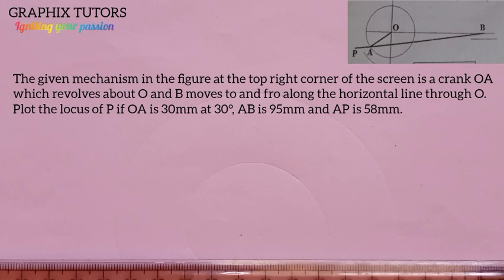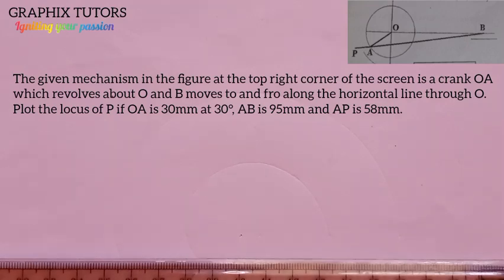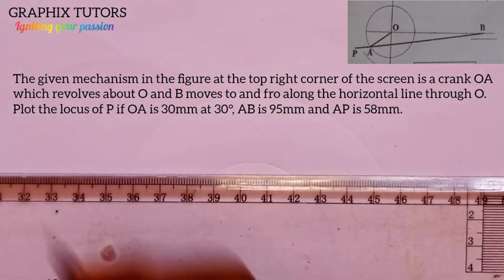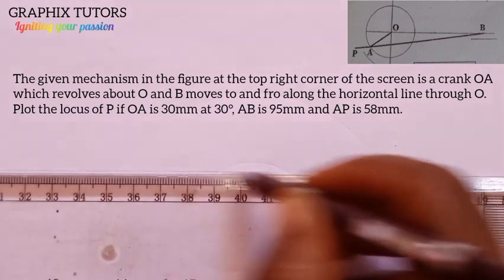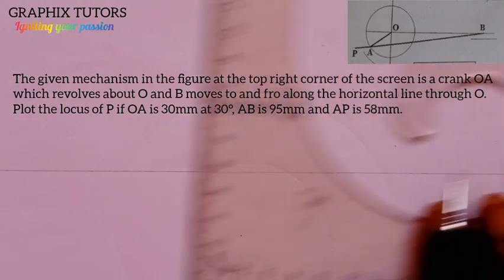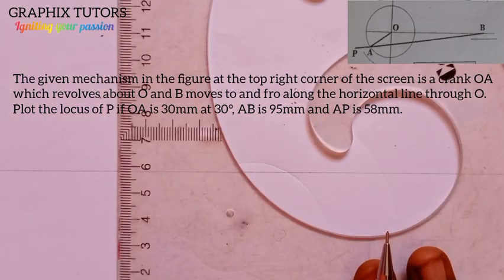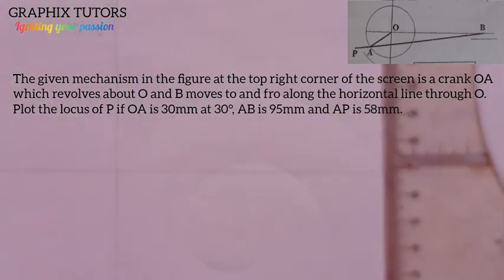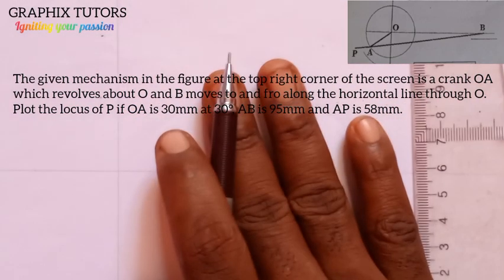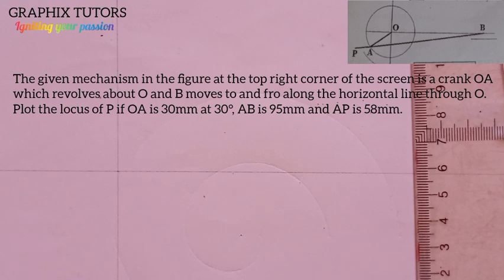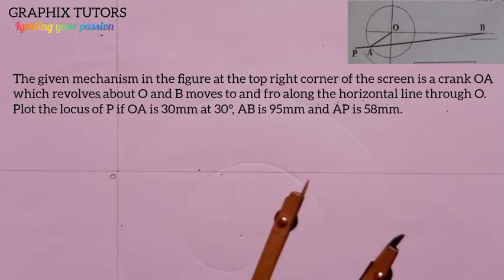The first thing you do when you see a question like this on link mechanism is to redraw the figure that has been given to you. So let us first draw the figure. First of all, you draw your horizontal line and also your vertical line, and we assume that they are meeting at this point O.